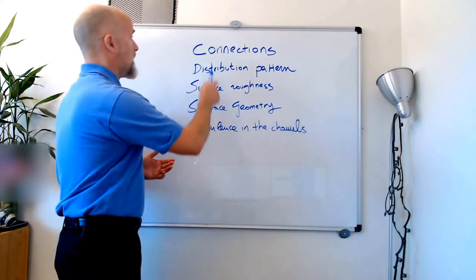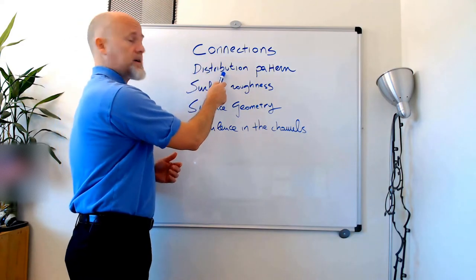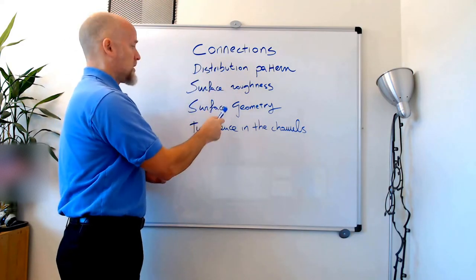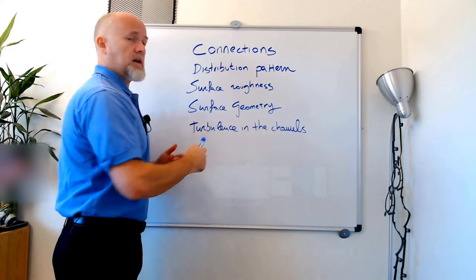So we said that we have connection, distribution pattern, surface roughness, surface geometry, and turbulence in the channels.